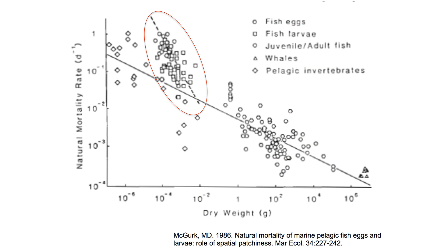However, there is a downside to this. Associated with pelagic larvae is a very high mortality rate compared to other organisms of the same body weight. This mortality hit is so high that we believe there must be another reason for pelagic larvae to evolve — it can't be explained by these other benefits we just discussed.